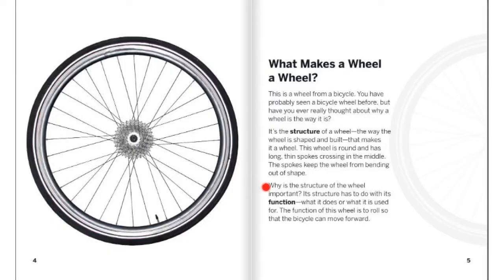Why is the structure of the wheel important? Its structure has to do with its function — what it does, or what it is used for. The function of this wheel is to roll so that the bicycle can move forward.